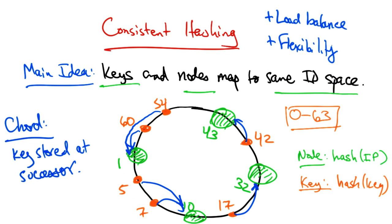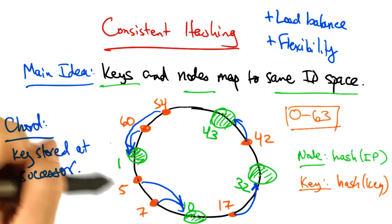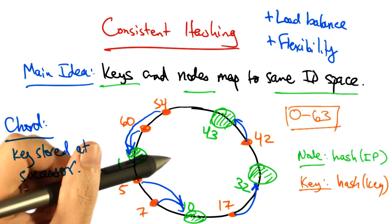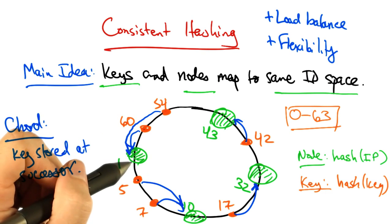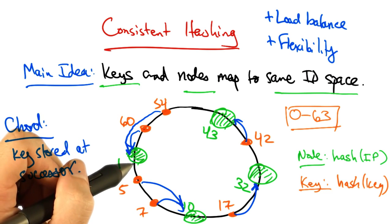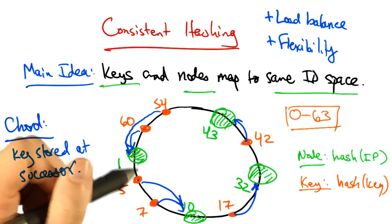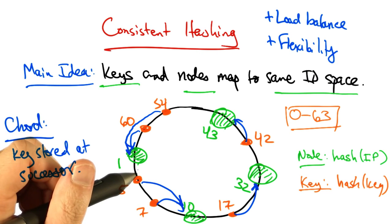Consistent hashing offers the properties of load balance, because all nodes receive roughly the same number of keys, and flexibility, because when a node joins or leaves the network, only a fraction of the keys need to be moved to a different location.